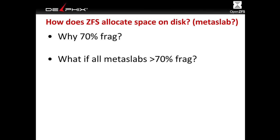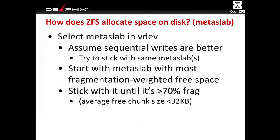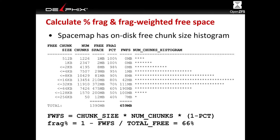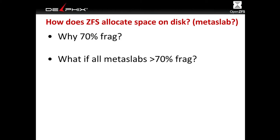Now that we understand what it means to be 70% fragmented: everybody knows why we said to stick with a metaslab until it's 70% fragmented, right? Actually, that 70% figure is also completely arbitrary. There's nothing magical about it. And there are big questions: what if all our metaslabs are more than 70% fragmented? Does that mean we're switching between metaslabs on every allocation? That doesn't sound good.